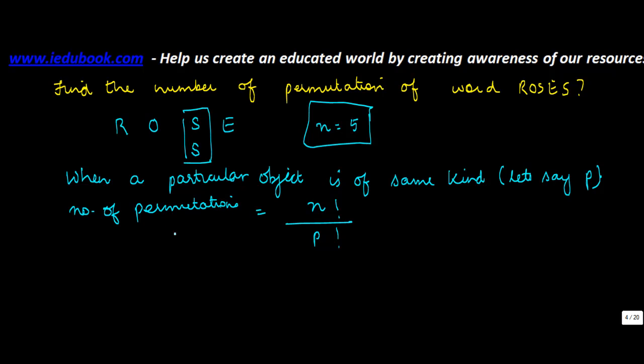Now what does this mean? This means that in the word ROSES, S which is of same kind, let's say p, has two elements. So therefore the permutation will be factorial n which is 5 upon factorial p. p basically refers to the number of times this particular object occurs. So S occurs two times, so p is equal to 2. So this becomes factorial 2, which you can also write as 5 into 4 into 3 into factorial 2, which gives you 60.